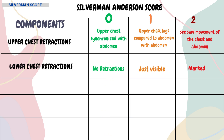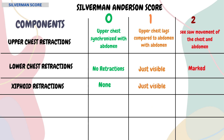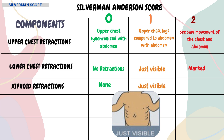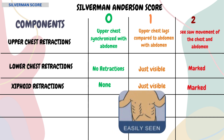The next component is xiphoid retractions. If no retractions are seen below the xiphoid process, a score of 0 is given. If visible retractions are present, a score of 1 is given. If retractions are marked, a score of 2 is given.